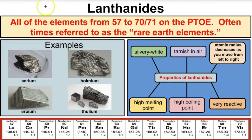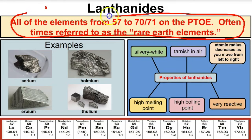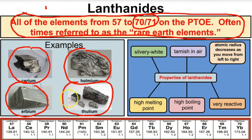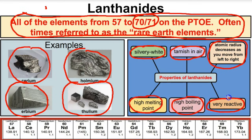Next up we have the lanthanides — all the elements from atomic number 57 to 70 or 71 on the periodic table, sometimes referred to as the rare earth elements. Note that some periodic tables have lanthanides going to 70 and some to 71. Examples include cerium, holmium, thulium, and erbium — all metals since they're to the left of the stair-step line. Properties include being silvery white, tarnishing in air, decreasing atomic radius moving left to right, high melting and boiling points, and being very reactive.